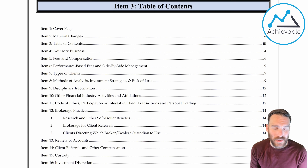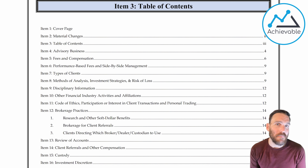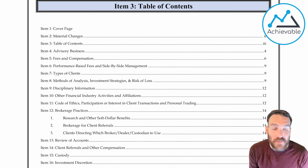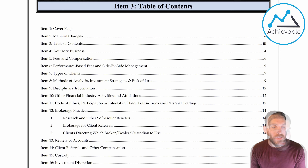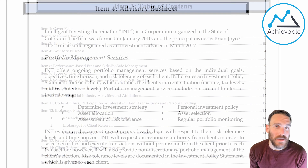Let's take a look first at the table of contents. There's a lot of stuff here. The first page is just a cover page. The second page was material changes, and there was actually nothing there, which just means that from the time this brochure was created to now, there haven't been any big monumental changes to the business. The table covers the advisory business, fees and compensation, performance-based fees, types of clients, methods of analysis, disciplinary information — pretty much everything covered in this Achievable chapter.